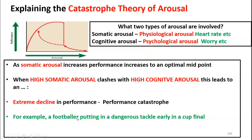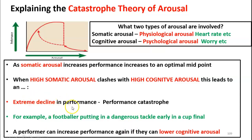That is the basic explanation. An important finishing point to this theory is that out of the two types of arousal, it is cognitive arousal that is most detrimental to performance. After a catastrophe, if a performer can lower cognitive arousal, their performance can increase again. So the football player who makes a dangerous tackle early on — if he gets away with it and then lowers his fear of failure, lowers his panic about not winning the game, and calms down cognitively — he can then increase his performance level again. A performer can increase performance again if they lower cognitive arousal after the catastrophe.